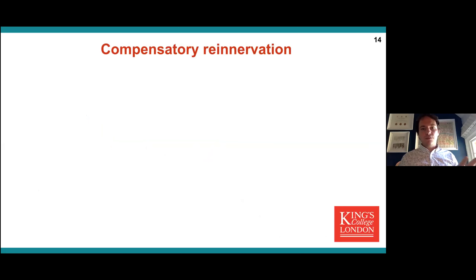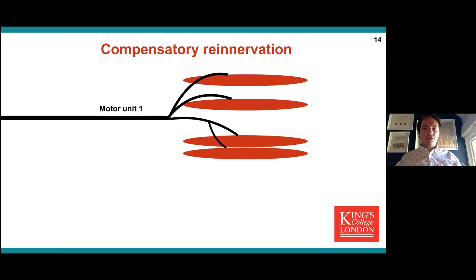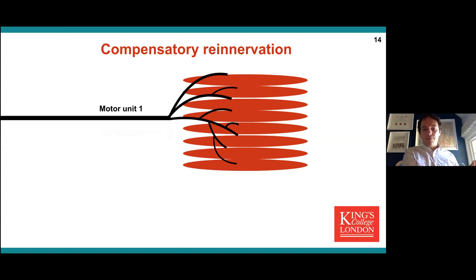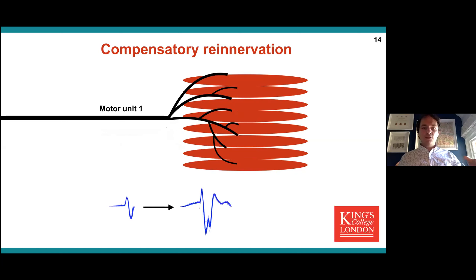This is an important point to emphasize, especially in ALS: there is compensatory re-innervation. If motor unit one connects to a series of muscle fibers and motor unit two has overlapping innervation — what if motor unit two dies? What we know happens is that motor unit one has the capability to take on the role that motor unit two had, so you now have eight muscle fibers innervated by a single motor unit. This means motor unit one's morphology changes every time it fires, and we're hoping to detect these complex changes over time in ALS.